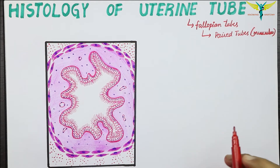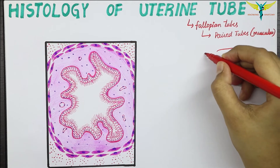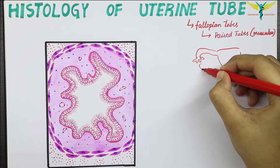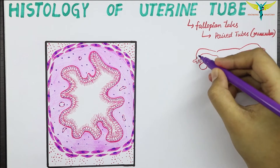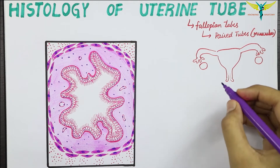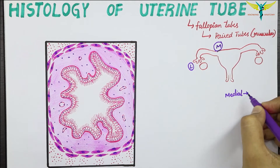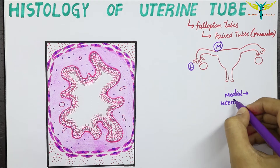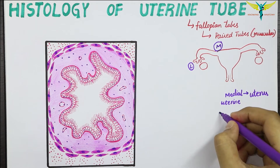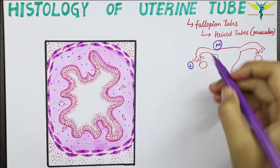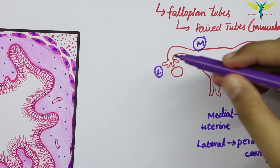Here is the uterus and these are the uterine tubes, and here will be the ovary simultaneously on the other side. Each tube has a lateral attachment and a medial attachment. The medial end is also called the uterine end, which is attached to the opening into the uterus, and the lateral end opens into the peritoneal cavity nearer to the ovary.